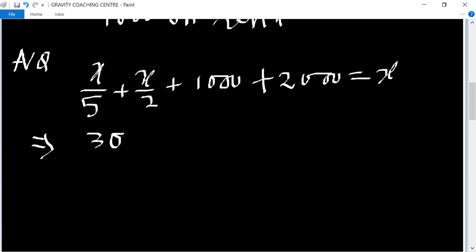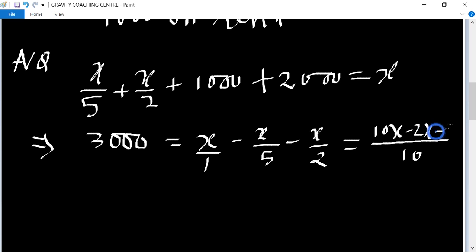So 3,000 equal to X minus X upon 5 minus X upon 2. Now we will take LCM of 1, 5, 2. So the LCM is 10.